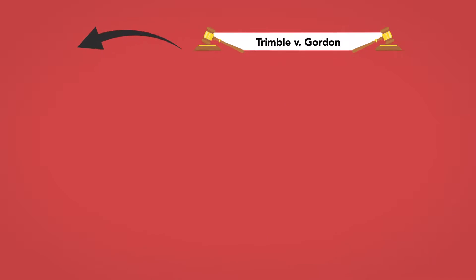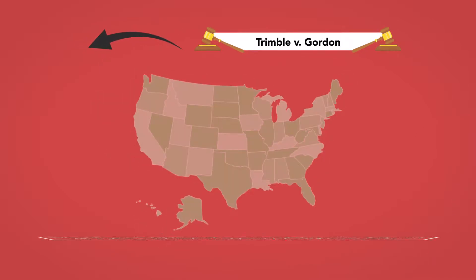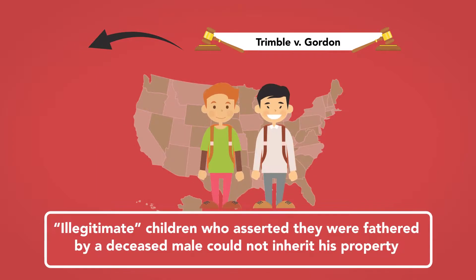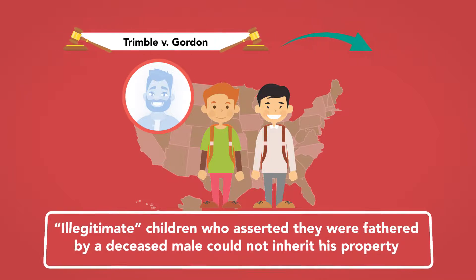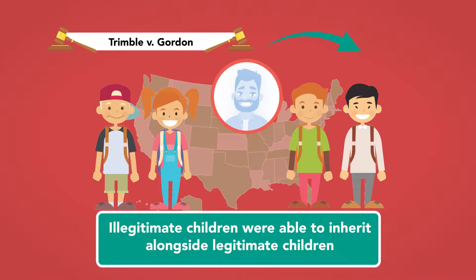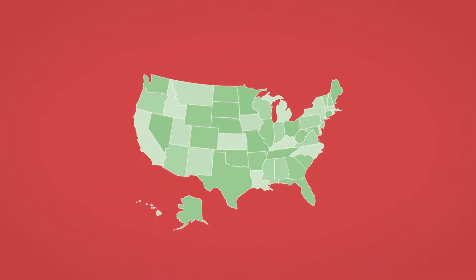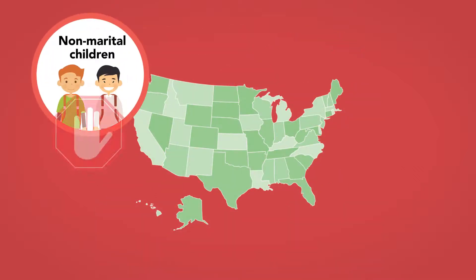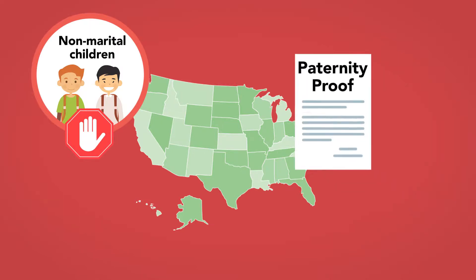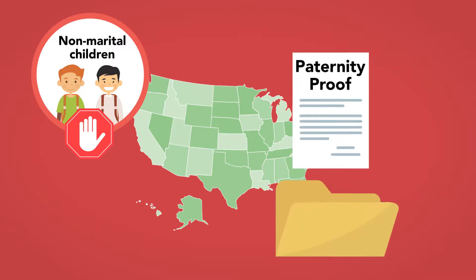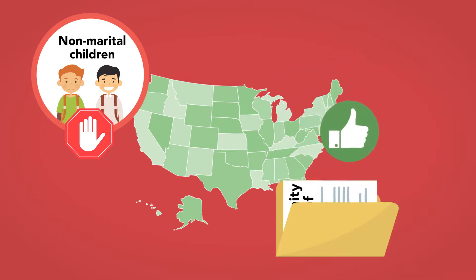Prior to the decision, in many states, illegitimate children who asserted they were fathered by a deceased male could not inherit his property. After the decision, illegitimate children were able to inherit alongside legitimate children. It should be noted that while states cannot ban non-marital children from inheriting, states can and usually do require some level of proof of paternity before allowing intestate inheritance.